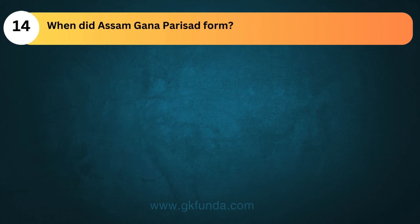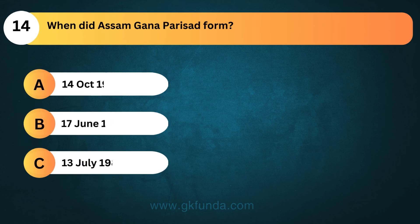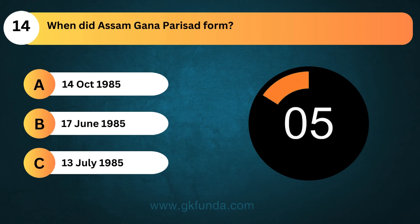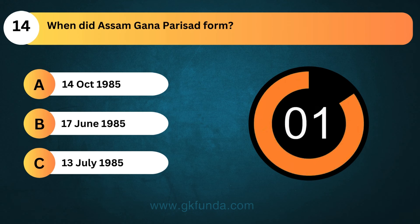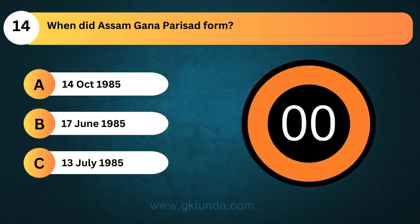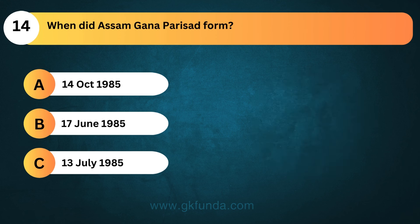When did the Assam Gana Parishad form? The answer is option A, 14 October 1985.